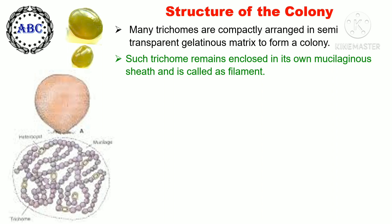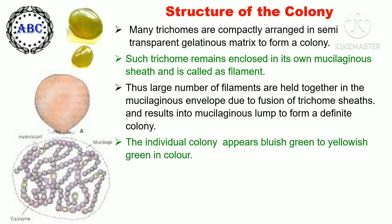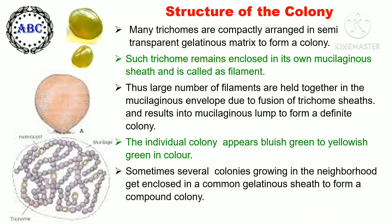In the structure of the colony, many trichomes are compactly arranged in a semi-transparent gelatinous matrix to form a colony. Each trichome remains enclosed in its own mucilaginous sheath and is called a filament. A large number of filaments are held together in the mucilaginous envelope, forming a mucilaginous lump to create a definite colony. The individual colony appears bluish-green to yellowish-green in color. Sometimes several colonies growing nearby get enclosed in a common gelatinous sheet to form a compound colony.